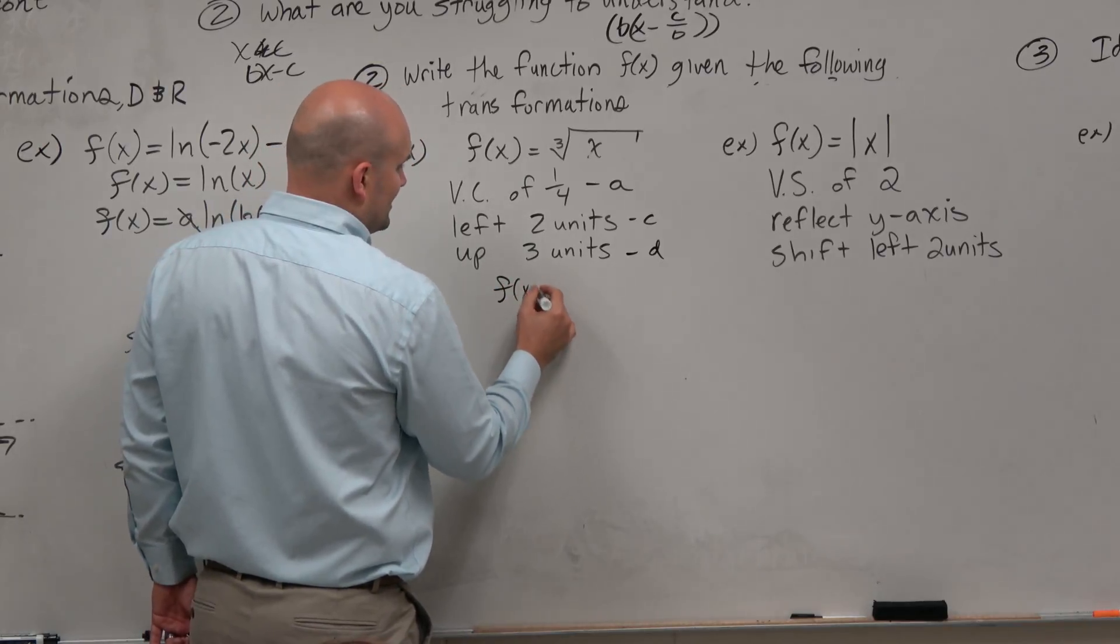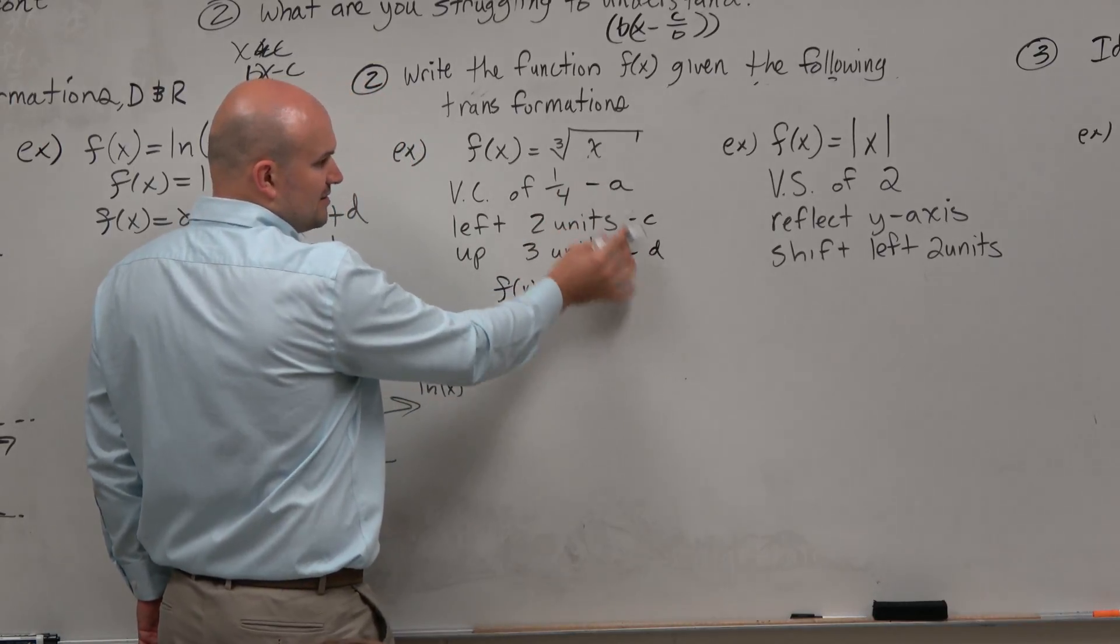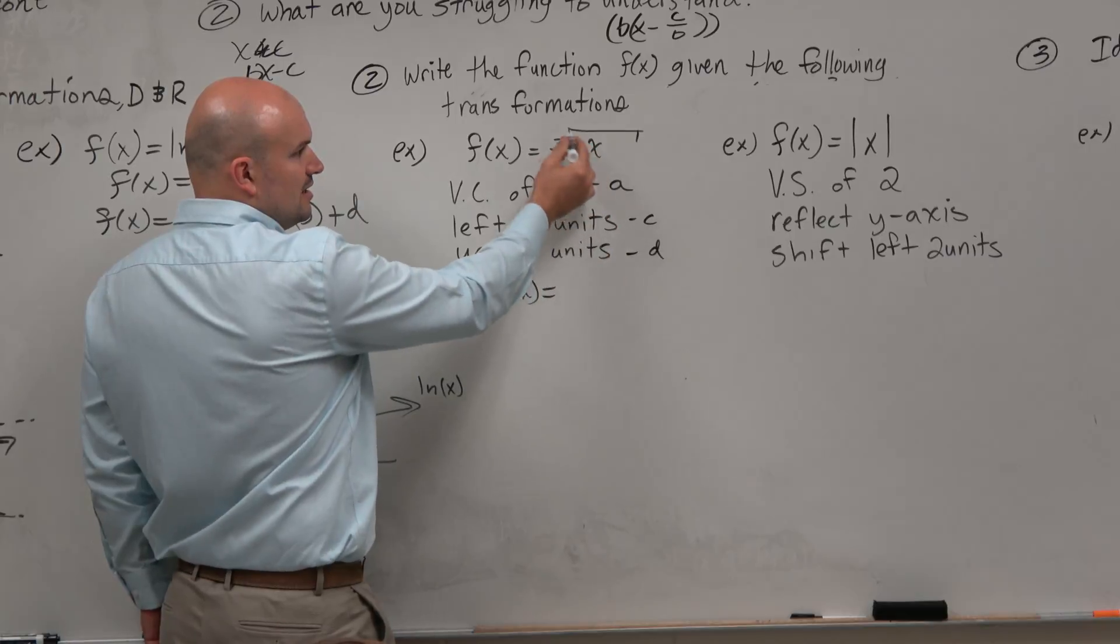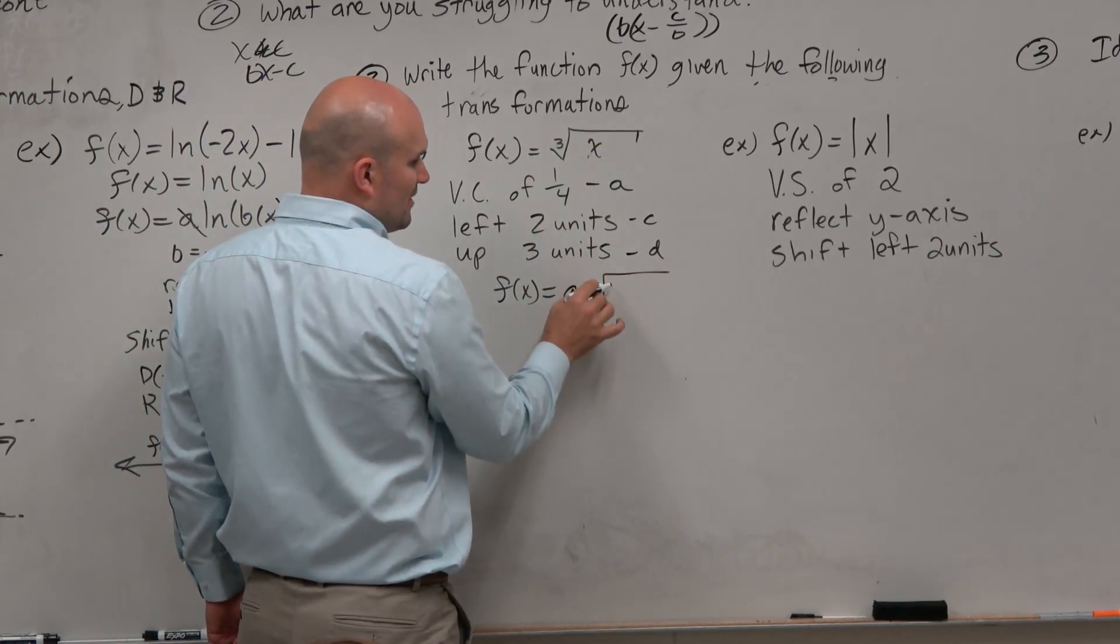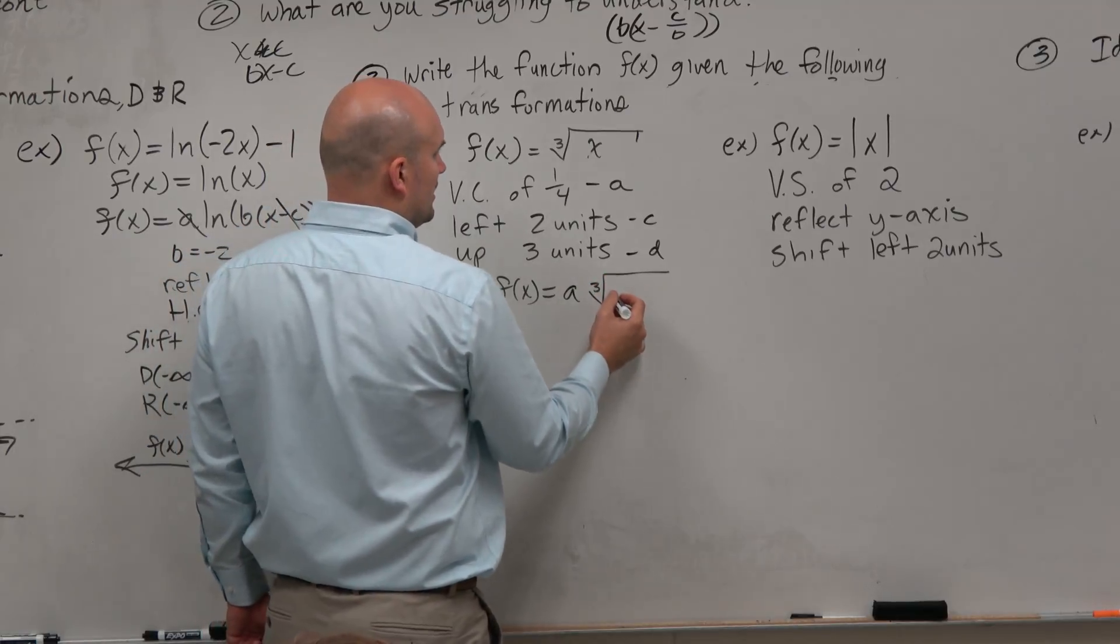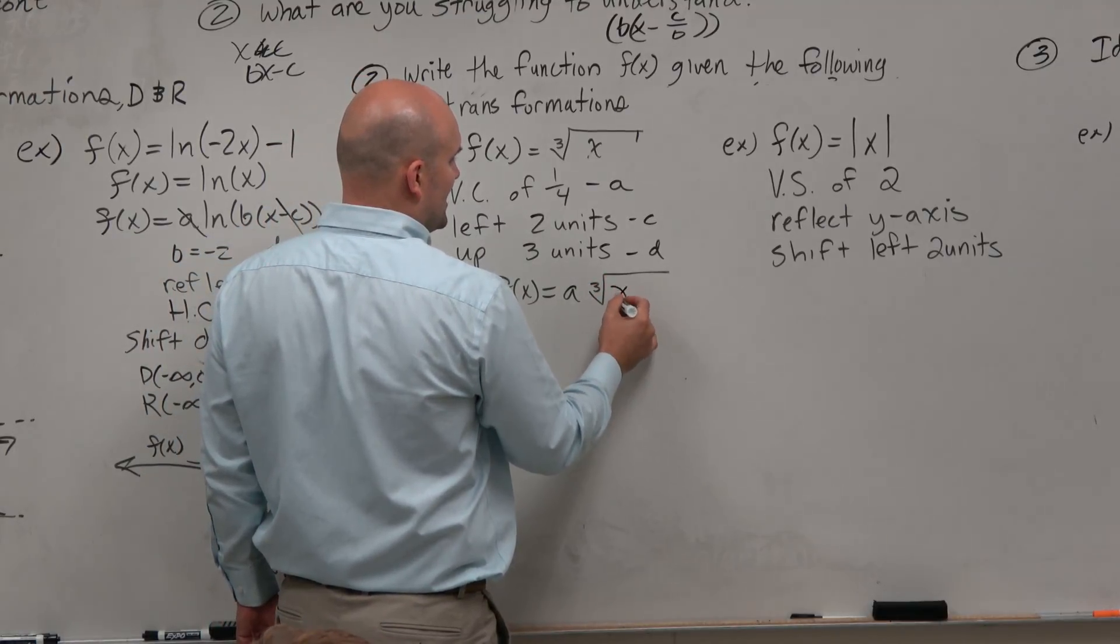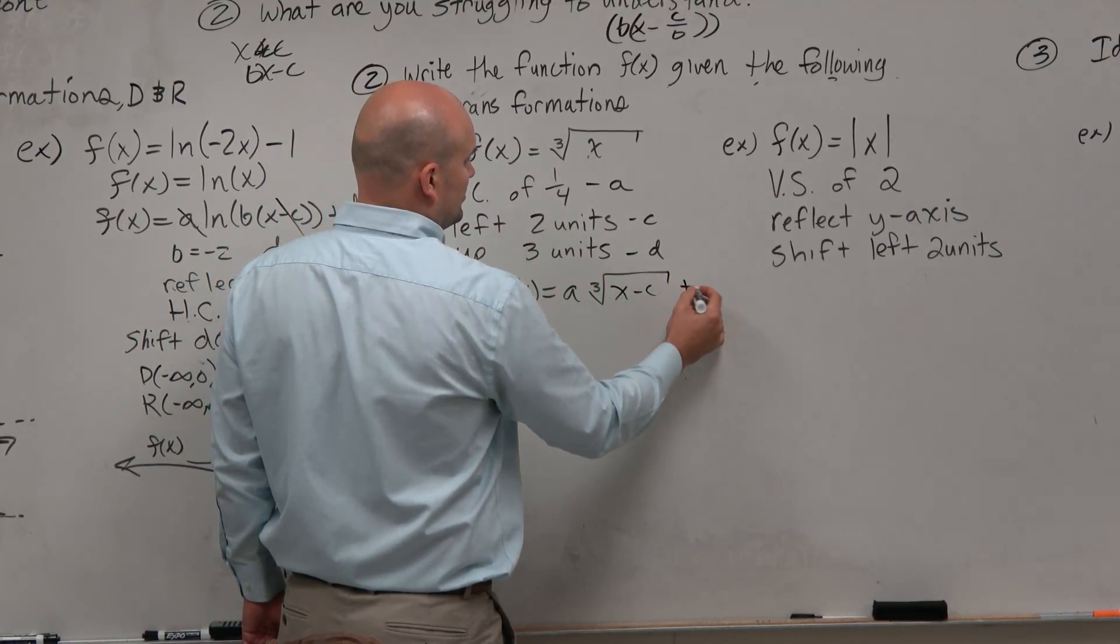So then you don't need to write it like this, but if you wanted to, where do my A, B, and C's apply to this? So A, cube root. I don't have a B, so I'm not going to write the B one. And then I'll just do x minus C plus D.